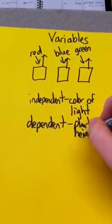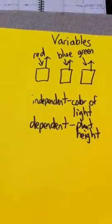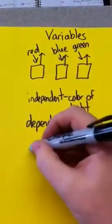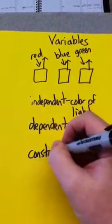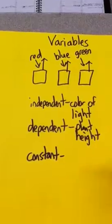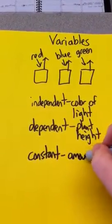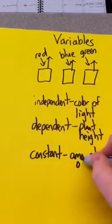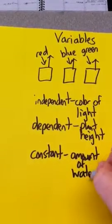And then a constant is something that you don't change. So a constant could be the amount of water, because you would give them all the same amount of water, because you only change one thing in the experiment.